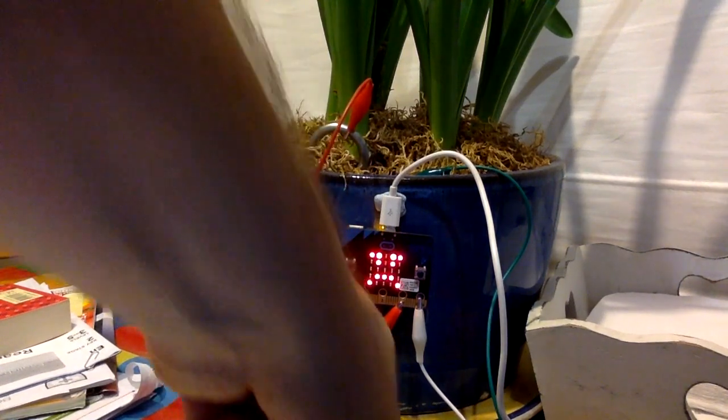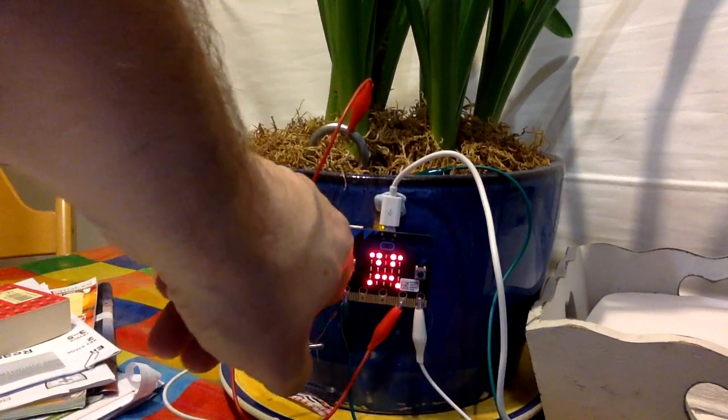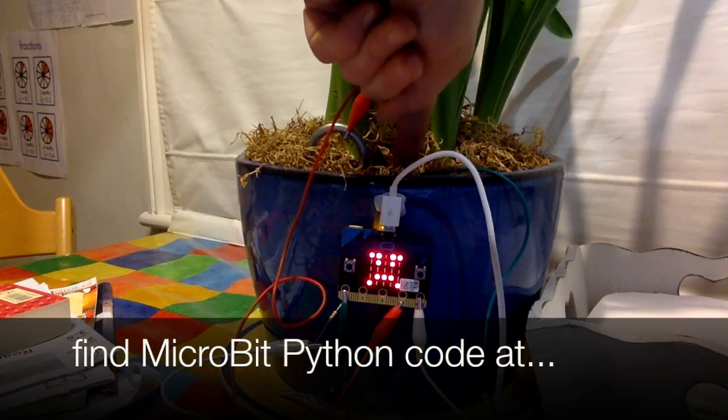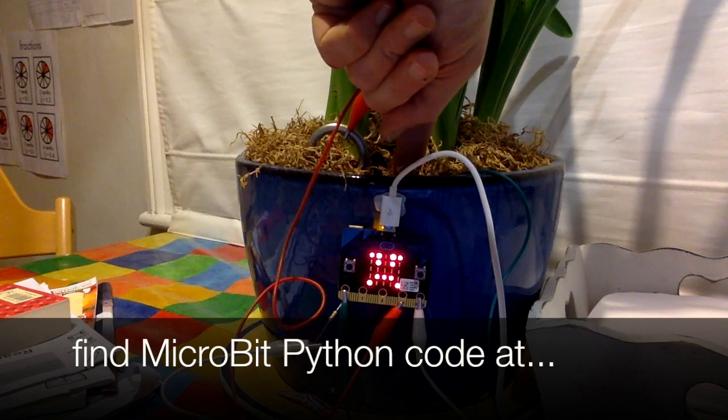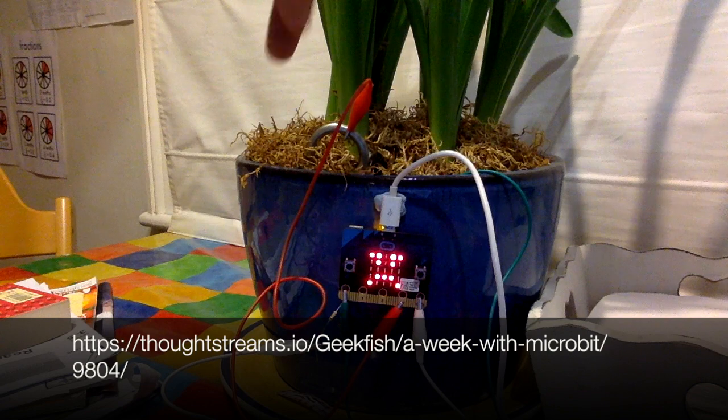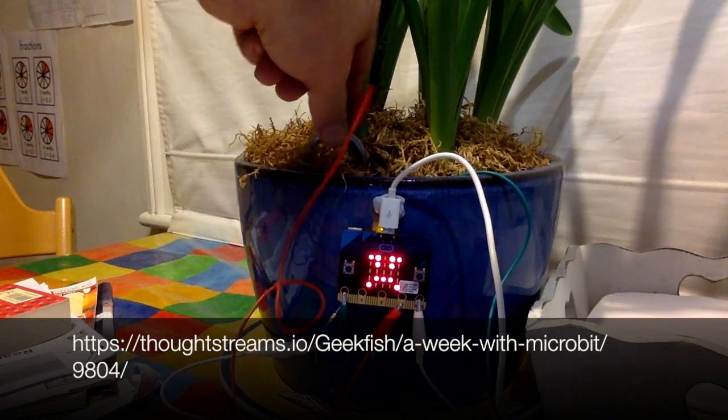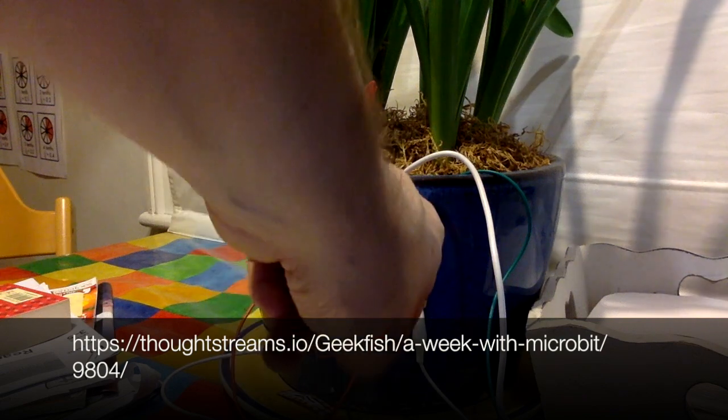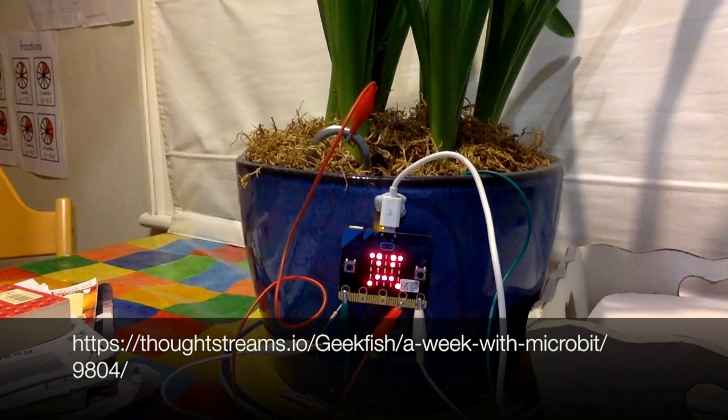So just to recap how it's wired up, I've got the ground pin here connected to pin zero via a 1.5K resistor. The zero pin is also connected up here into the plant using a rusty nail, not ideal. And then this galvanized steel hook or whatever it is is connected to the three volt supply on the microbit. It's showing a sad face at the moment.